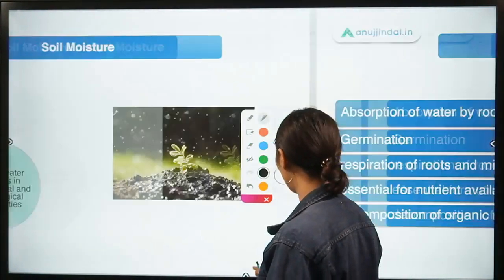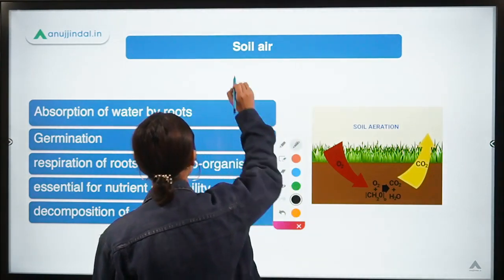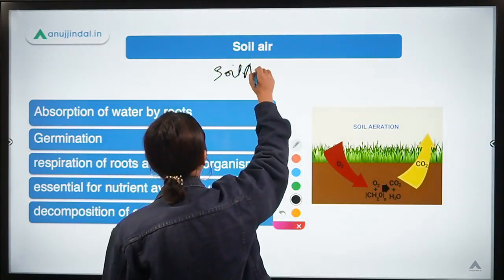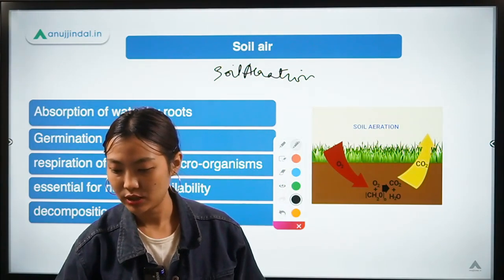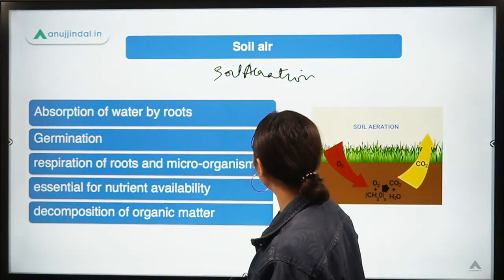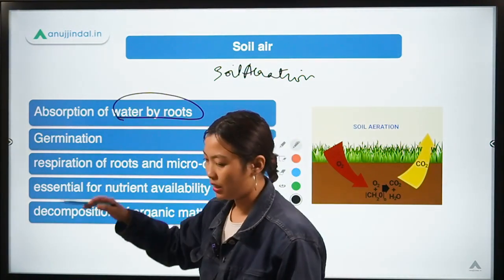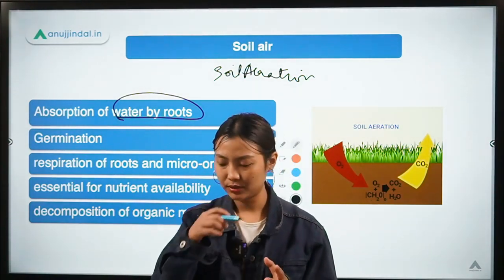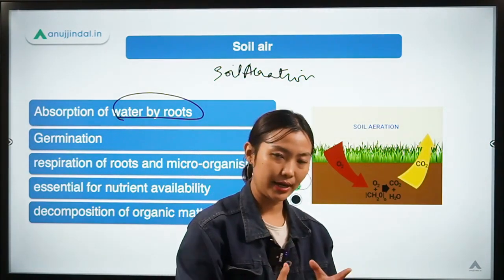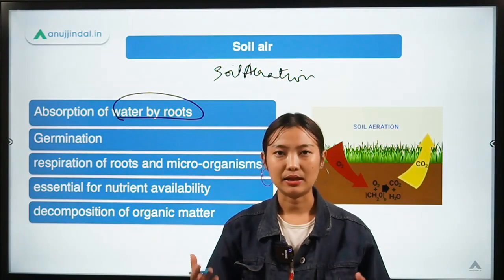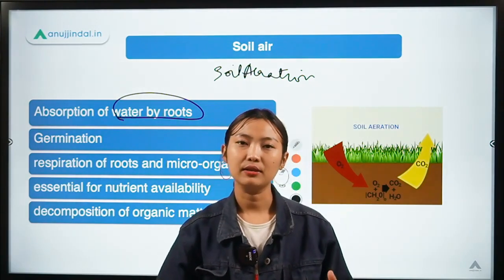Now coming to soil air — we are going to focus on soil aeration. Soil aeration helps in the absorption of water by the roots. When we say soil air is present in the soil, it means there is oxygen in the soil. Whenever there is oxygen and water, life begins, enabling microorganisms and various chemical and biological processes.